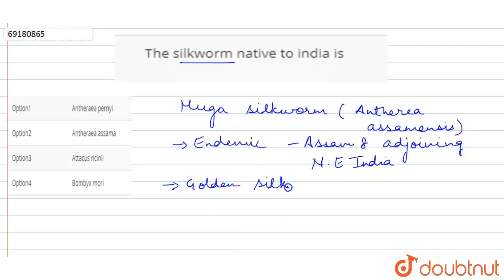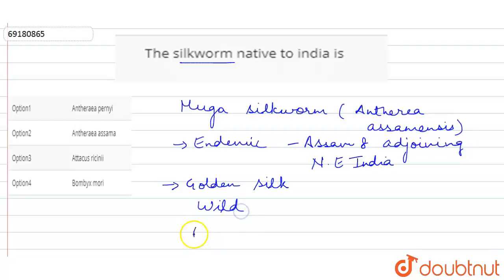Many ethnic and tribal groups have produced Muga silkworms. Muga silkworms are mostly wild, unlike the mulberry silkworms, which are a different species. They are wild species, whereas the mulberry species is domesticated.